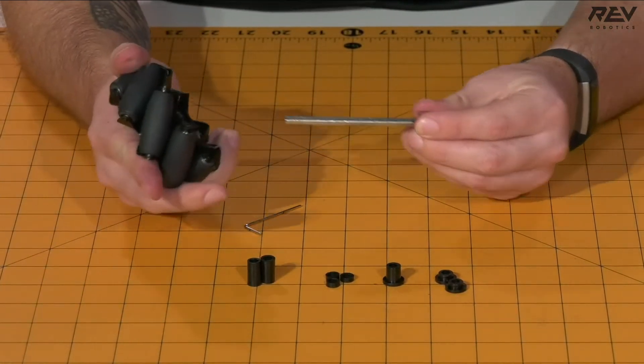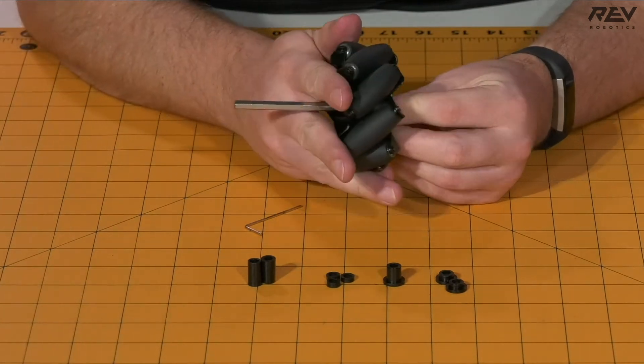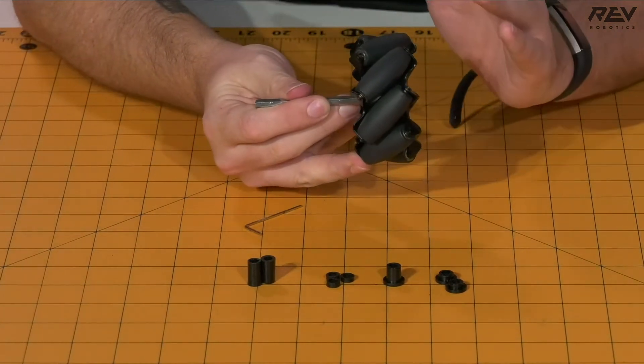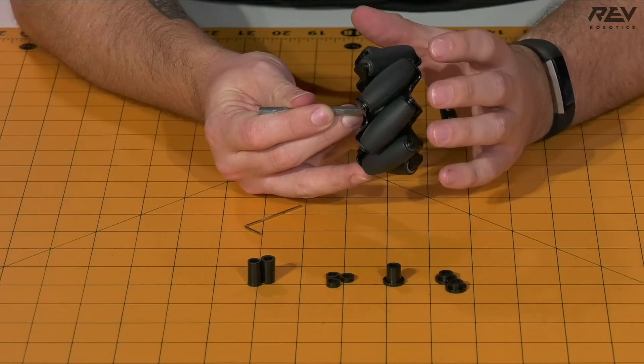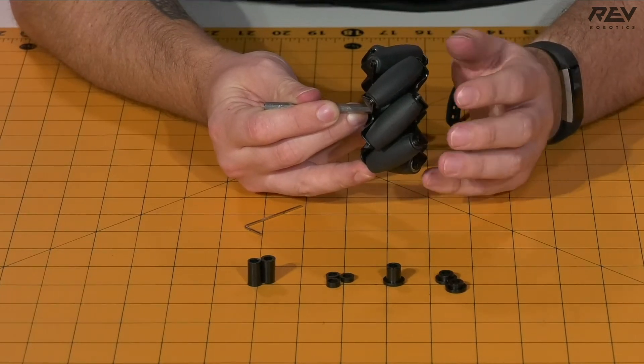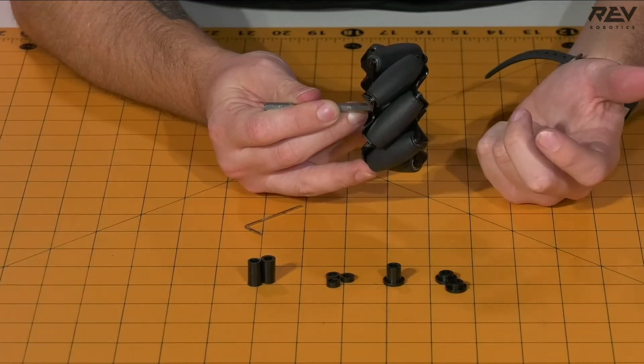Then take your mecanum wheel and slide it onto the hex shaft. It's not important if you're using a left or right mecanum wheel, as this is just being used for spacing and will be removed later during the assembly.